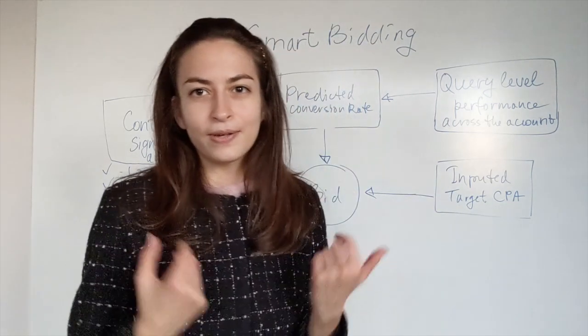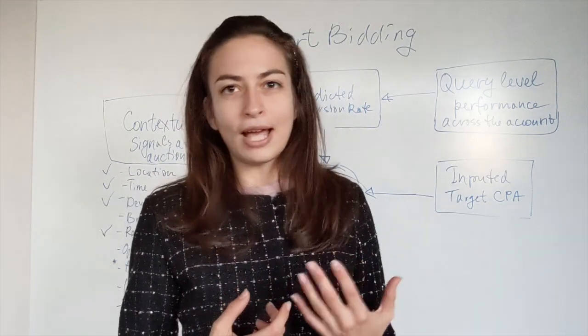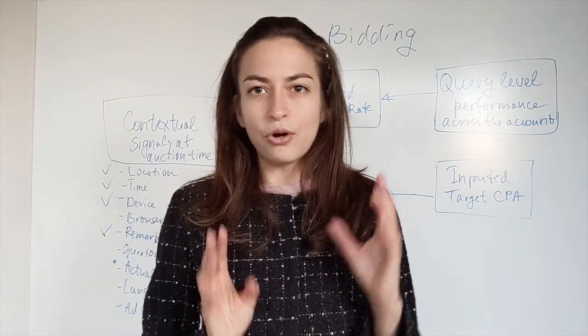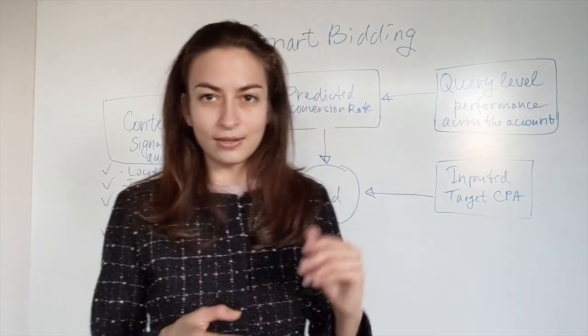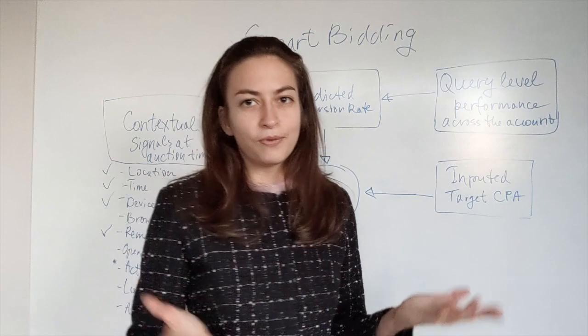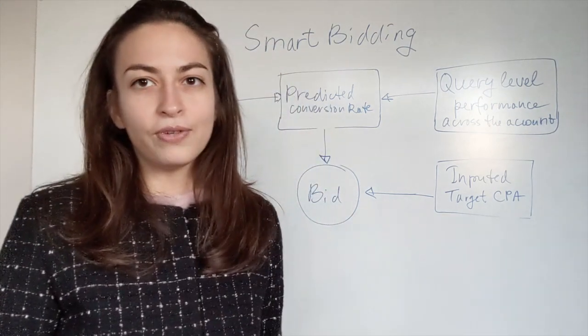It's a tremendous amount of variables in this equation which actually determine the bid. This is why it's called smart bidding: simply because it's very hard for a human to actually be so careful and predictive when they're setting a bid. It's not possible for a human to set a bid on an individual query.